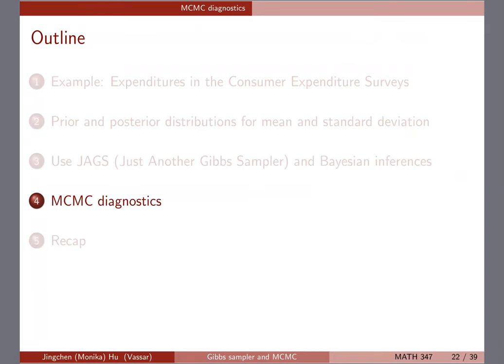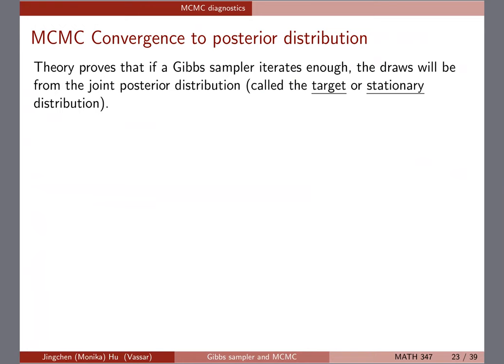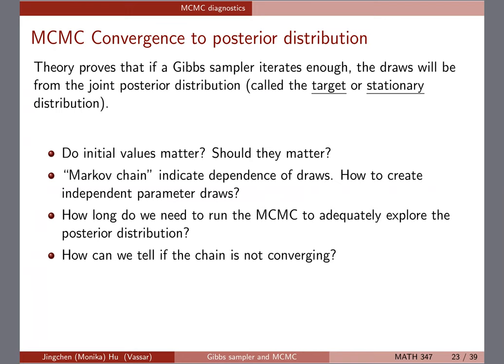If a Gibbs sampler iterates enough times, the draws will be from the joint posterior distribution, which in theory is called the target or stationary distribution. We need to run the Gibbs sampler long enough so eventually the draws will be from that target distribution. We already touched on this — the initial value doesn't really matter much. When we tried different initial values for mu and phi, we eventually saw very similar summaries.